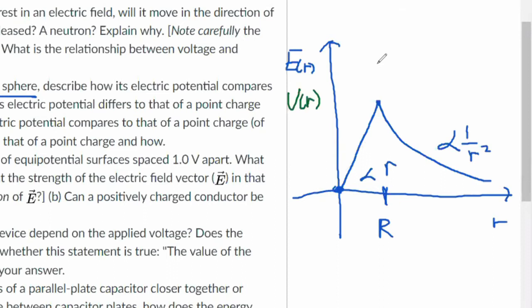And on that different scale, it'll look like, so let's say this is the voltage at that point. Voltage is going to look like 1 over r, proportional to 1 over r.